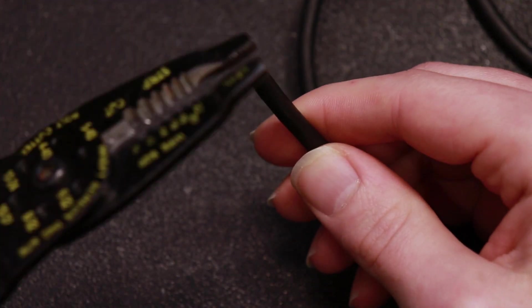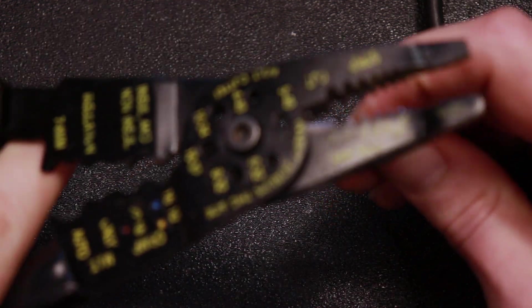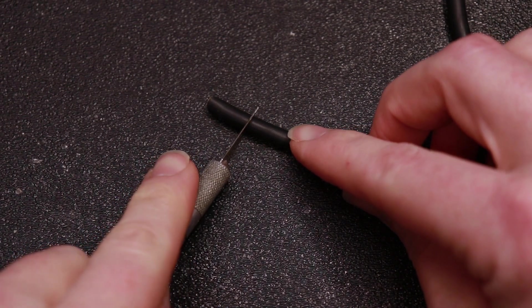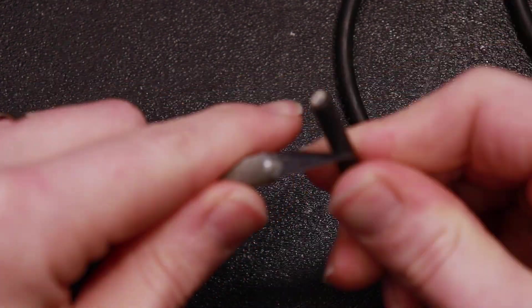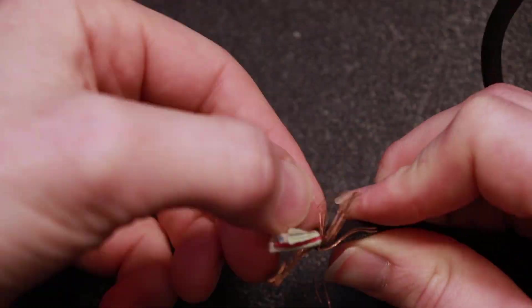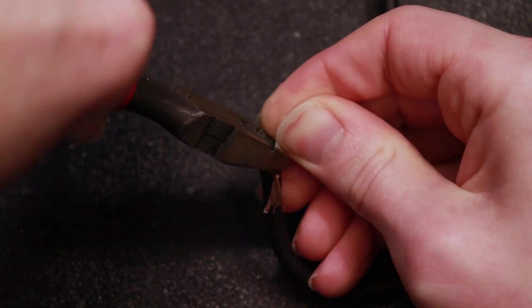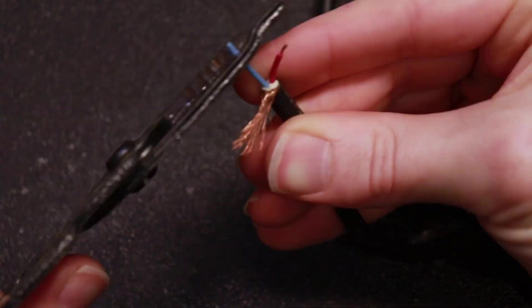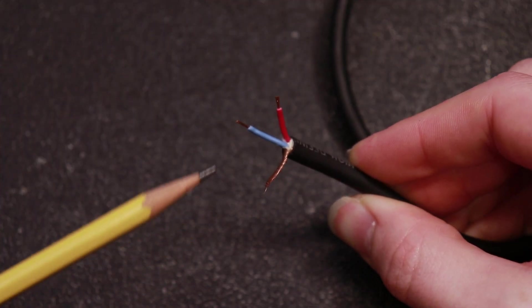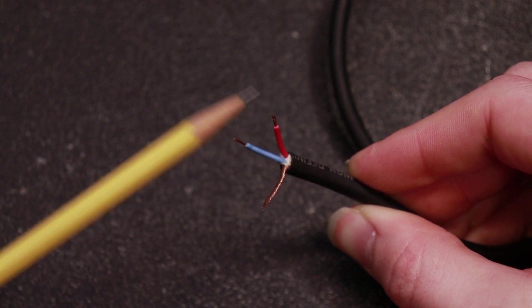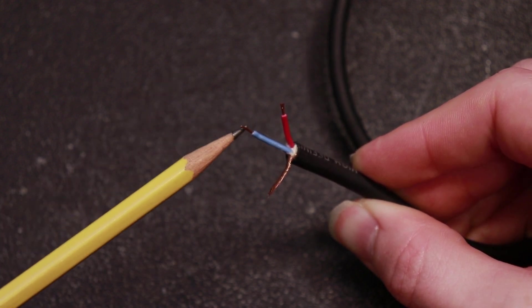So now we're going to take the end of our cable. Now I find a lot of times rather than using the wire strippers on these big rubber cables, that a lot of times it's easier to just use an X-Acto knife. And we can see here I have my ground or shield cable, my hot red wire for my hot signal, and my blue wire for my cold signal.